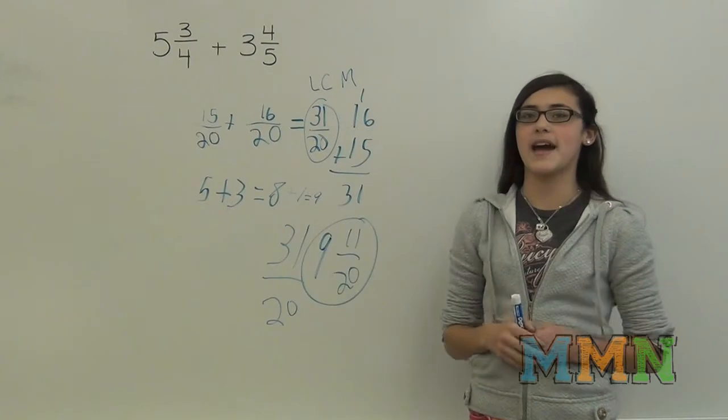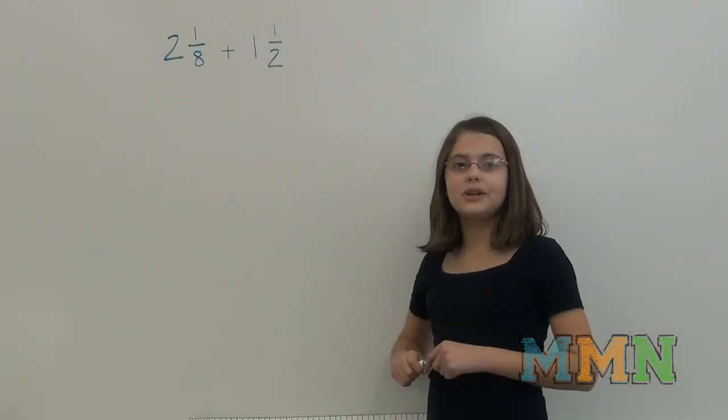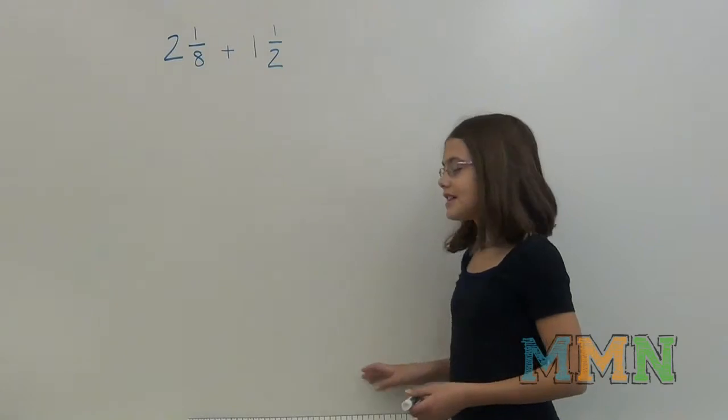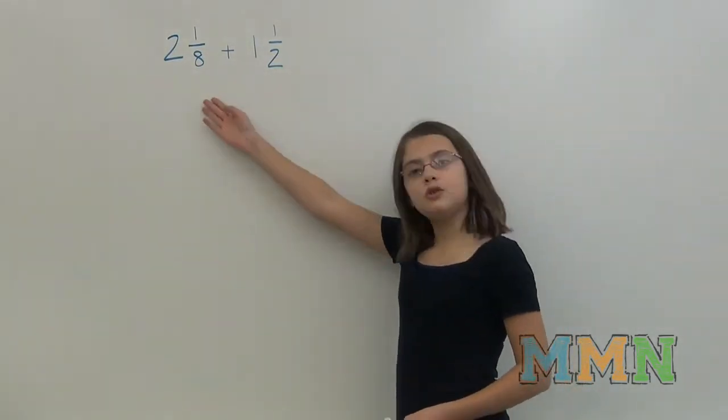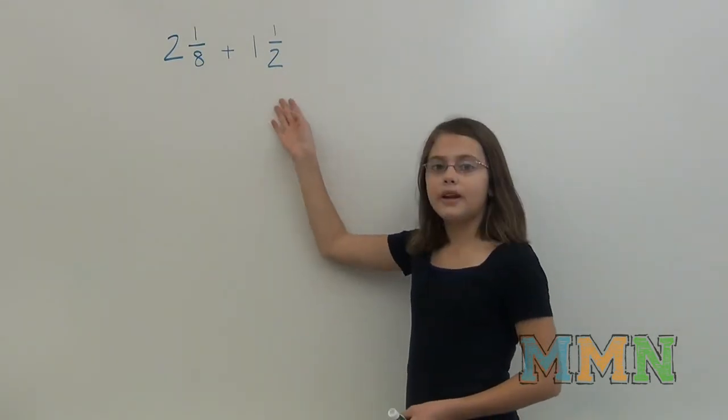Hi, I'm Emily. And I'm going to teach you another way to add mixed numbers by using a ruler. So our problem is 2 and 1 eighth plus 1 and 1 half.